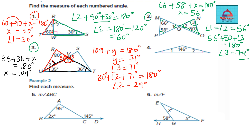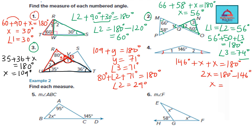Question 4 is straightforward. The two angles are already given to be equal — both are x. Setting up the equation: 146 + x + x = 180, so 146 + 2x = 180. Solving: 2x = 34, and x = 17 degrees. Both angle 1 and angle 2 equal 17 degrees.